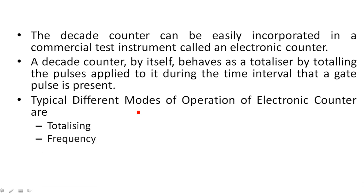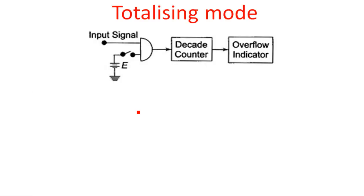The typical different modes of operation of this electronic counter are: first, totalizing, which is used to count the number of pulses; second, frequency mode, where we can calculate the unknown frequency of a signal; and third, period mode, which is used to measure the unknown time period of the signal.